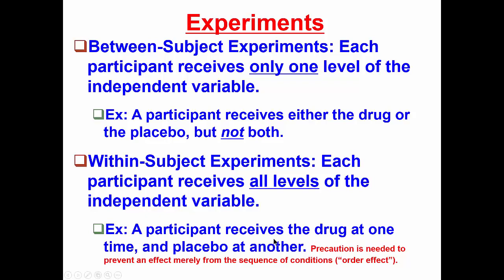Now, of course, once we do that, we have to take certain precautions. Specifically, we need to prevent any effect that merely arises from the sequence of conditions. We would call this an order effect. So if we do choose to run a repeated measures experiment, also called a within-subject experiment,